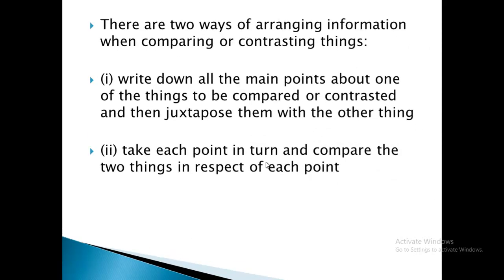There are two ways of arranging information when comparing or contrasting things. One, write down all the main points about one of the things to be compared or contrasted, and then juxtapose them with the other thing. Two, take each point in turn and compare the two things in respect of each point.